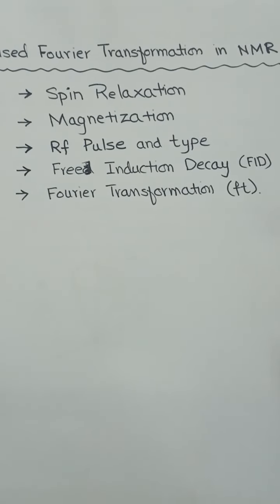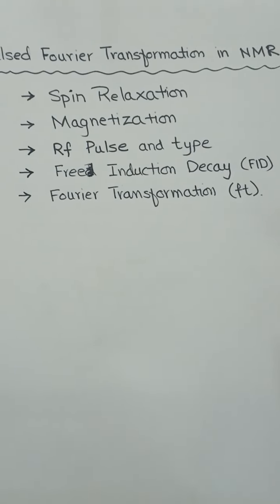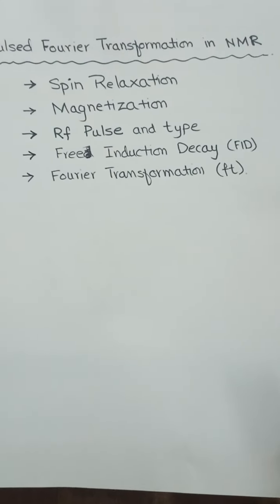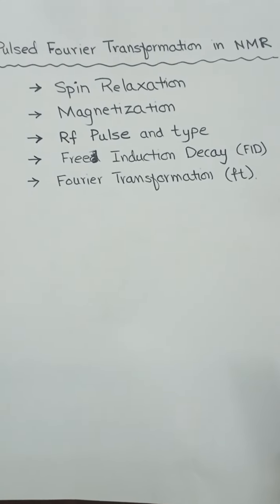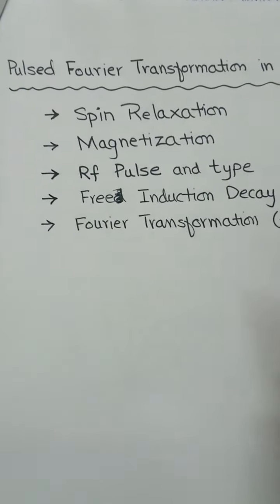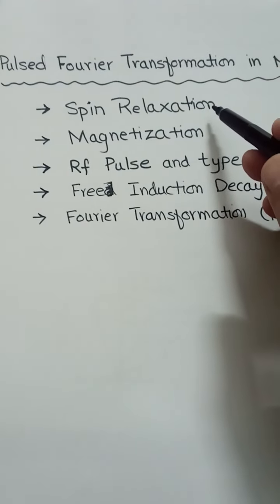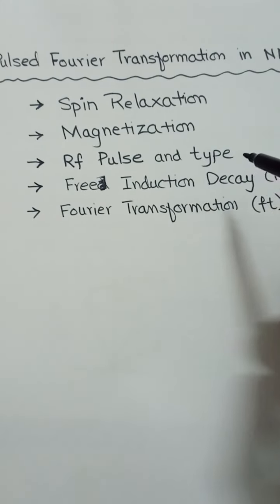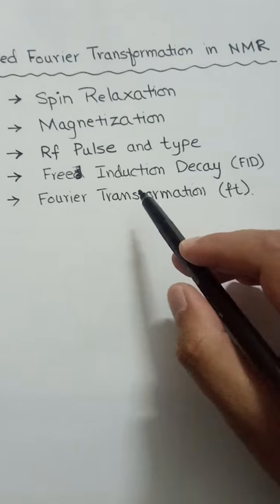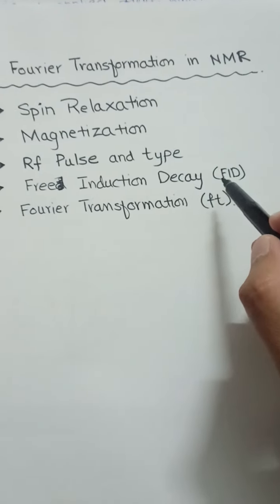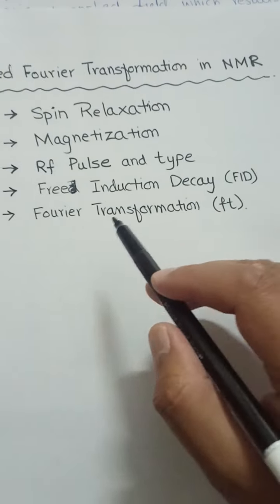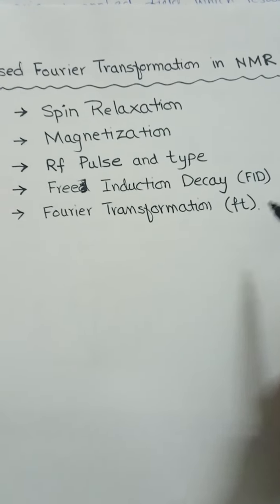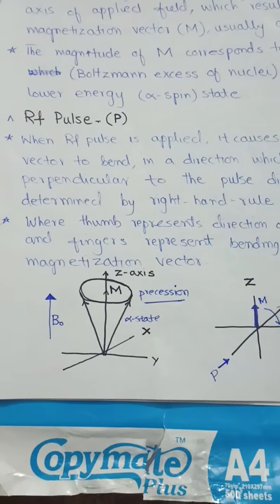Dear students, Assalamualaikum. In this lecture video, we will discuss the pulsed Fourier transformation technique in nuclear magnetic resonance. The topics include spin relaxation, magnetization vector, radio frequency pulse and its different types, free induction decay (also called FID), and Fourier transformation (FT). We will discuss all these topics one by one.